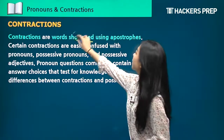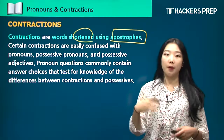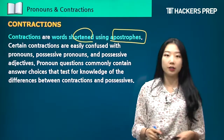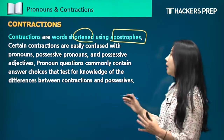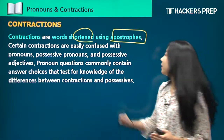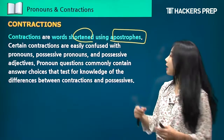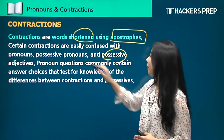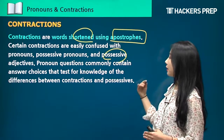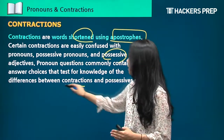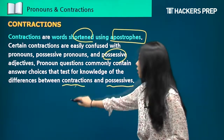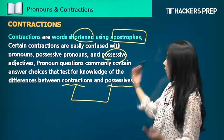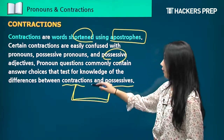Contractions are words shortened using apostrophes. Last time when we talked about punctuation and apostrophes, I did explain contractions briefly, but this time we're going to go more in depth. Certain contractions are easily confused with pronouns — possessive pronouns and possessive adjectives. Pronoun questions commonly contain answer choices that test knowledge of the differences between contractions and possessives. Just make sure you can differentiate between those two.